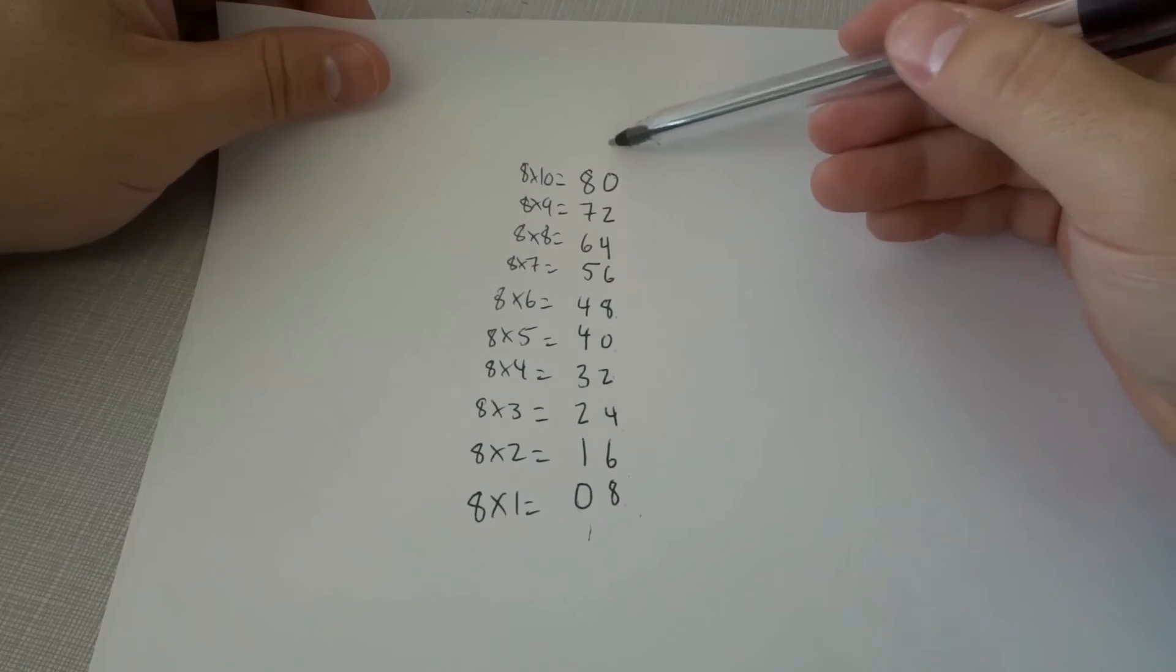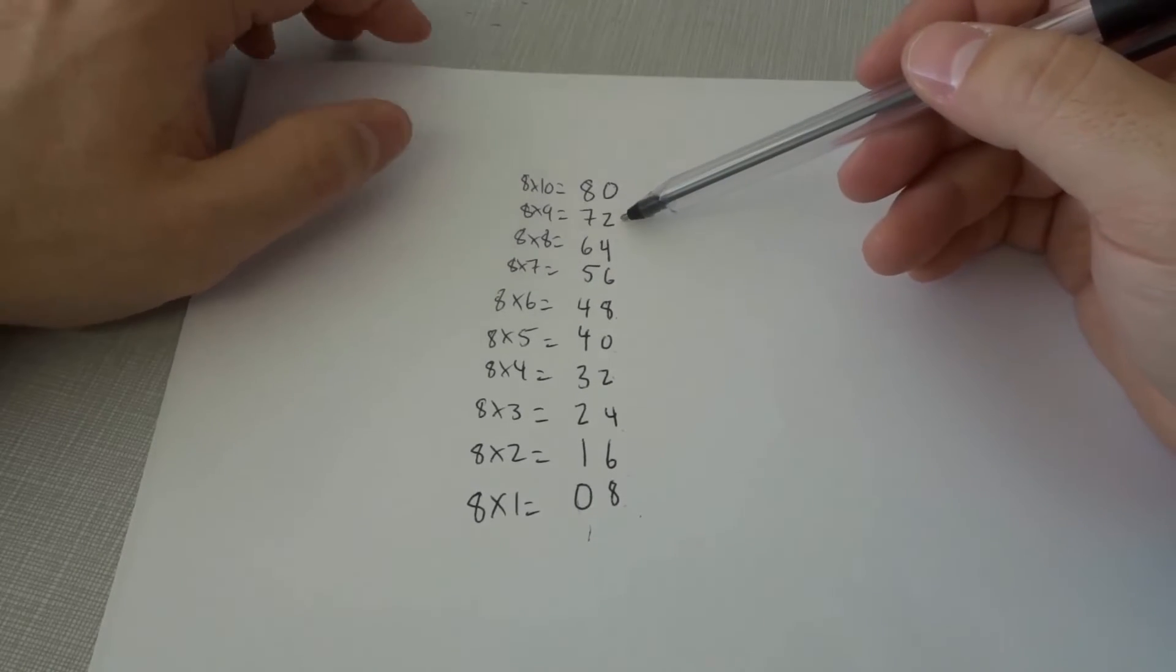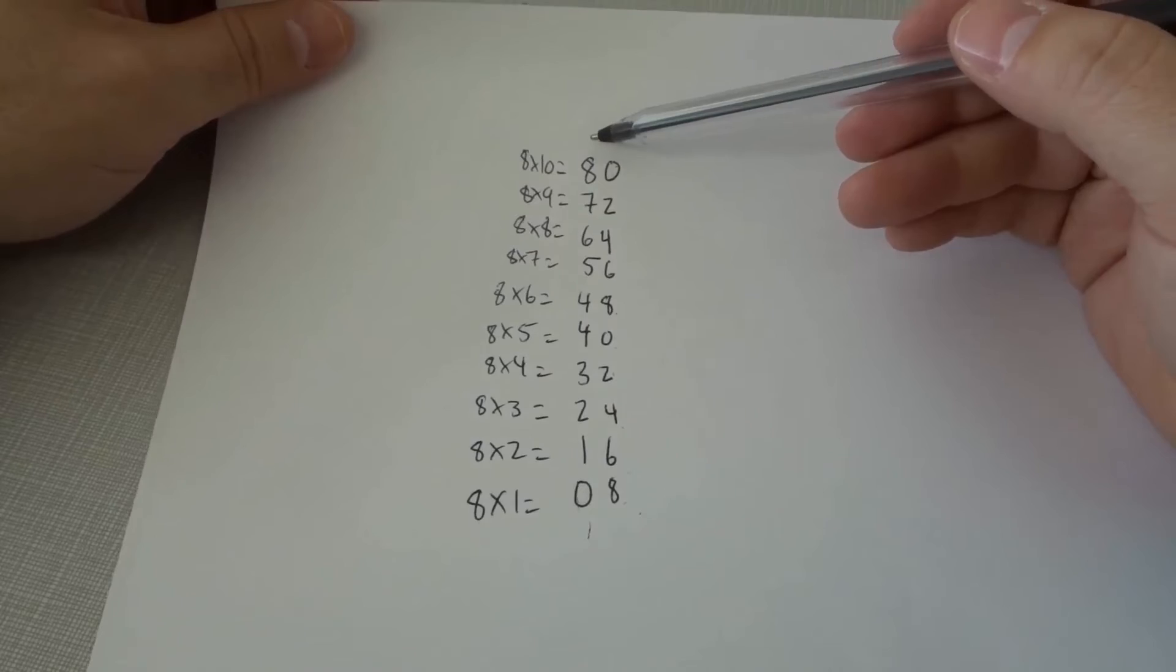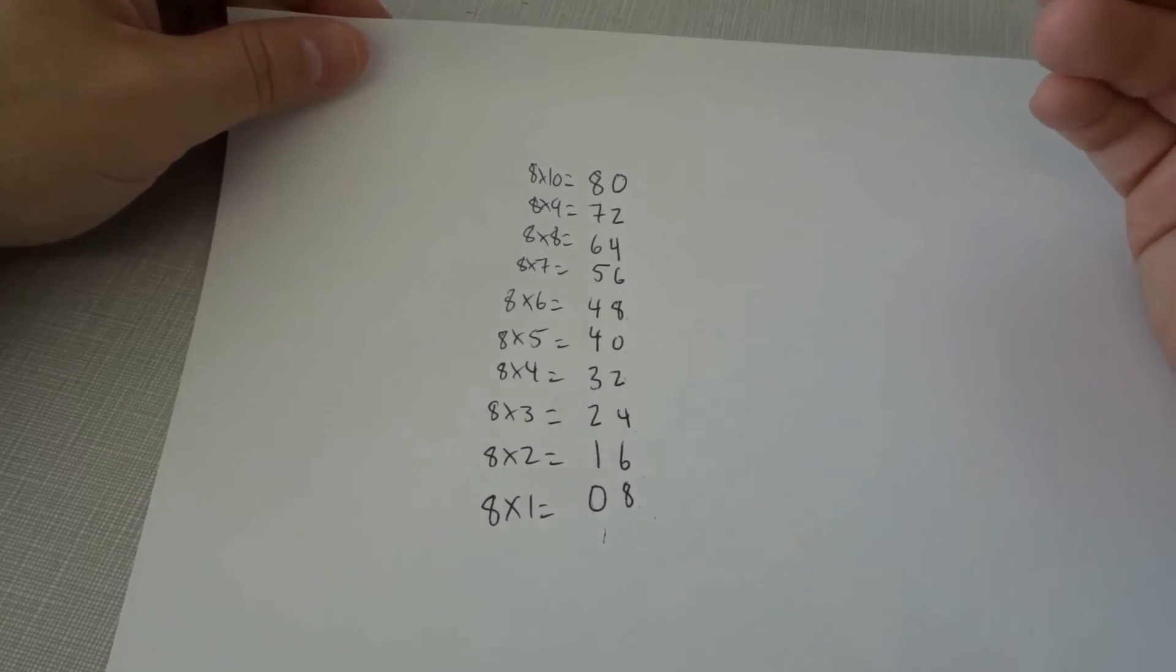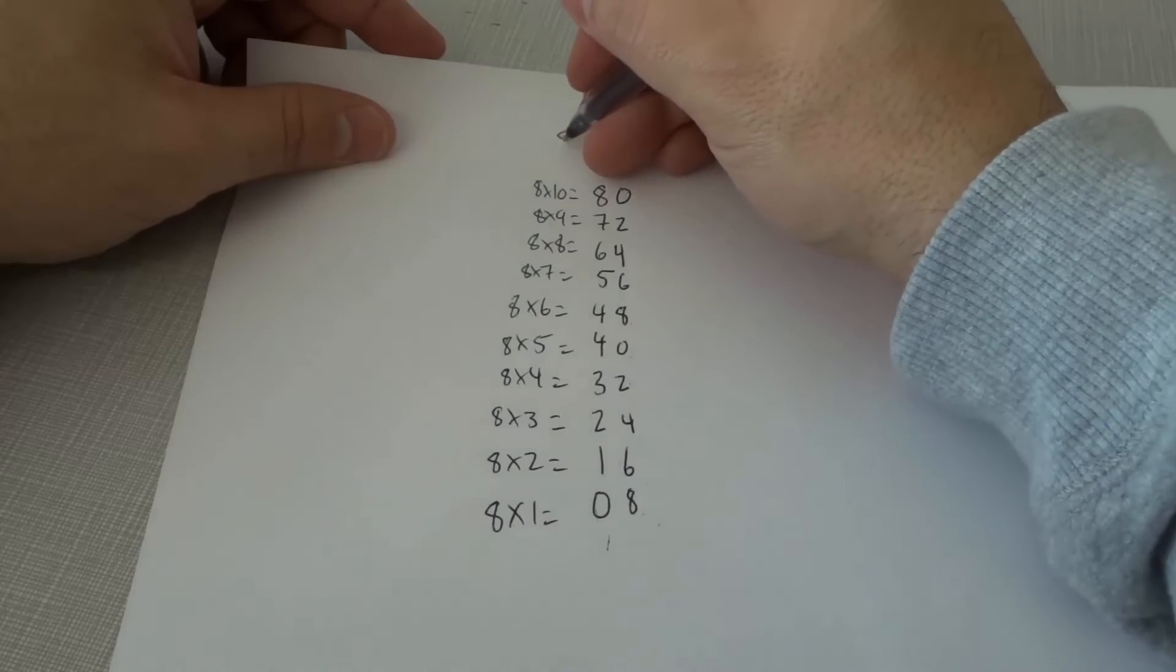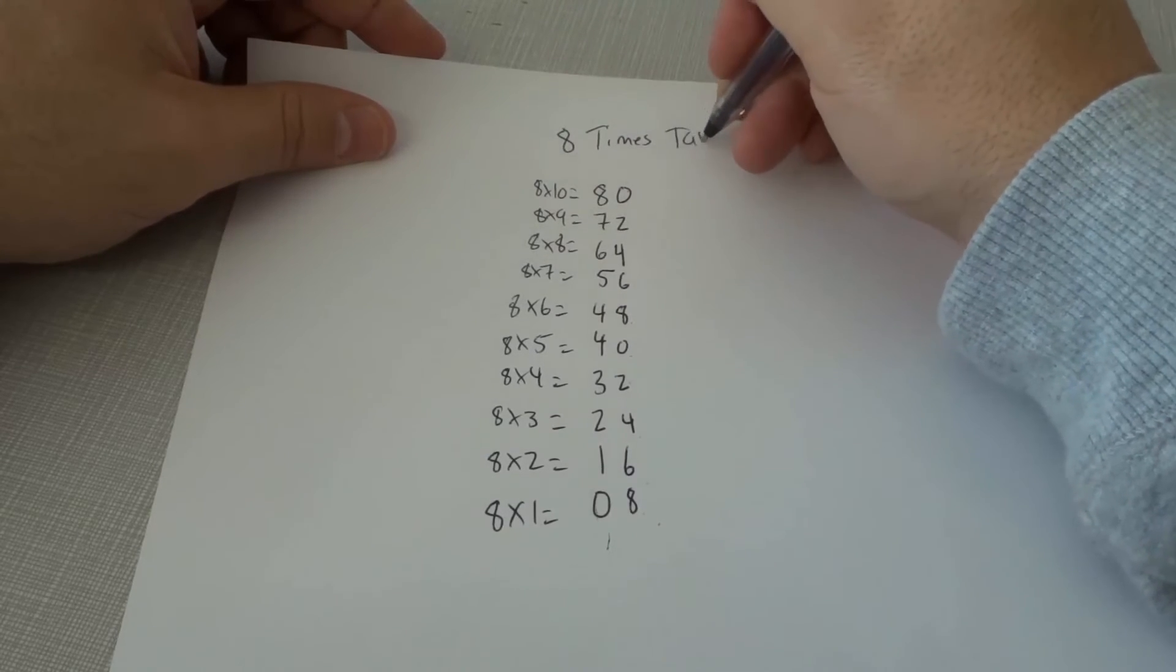And when we did that, we wrote down all of the answers to the 8 times table, to the 8 multiplication table, from 8 times 1 all the way up to 8 times 10. And it's literally that easy. It's that easy to learn the 8 times table.